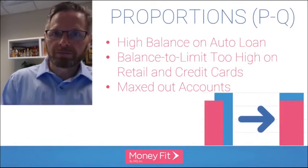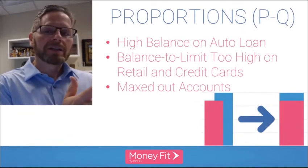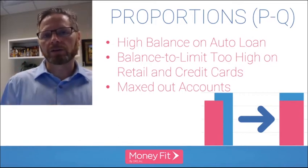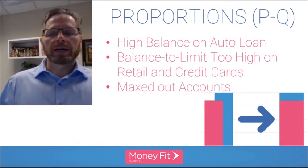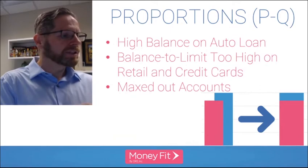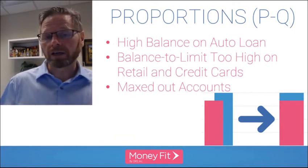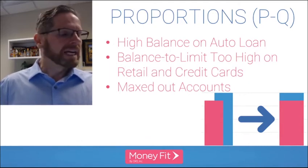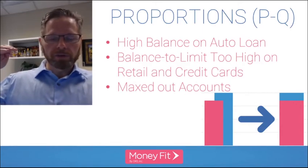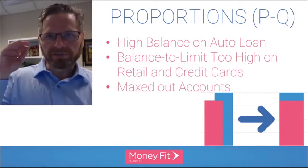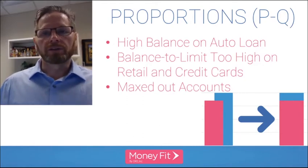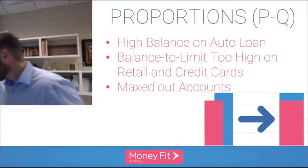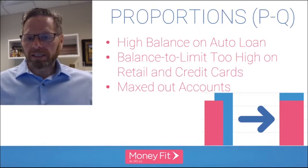Codes P and Q — mind your P's and Q's — are about proportions or ratios. High balances on an auto loan compared to its original balance, or a high balance-to-limit ratio on your retail and credit cards: these codes will kick in and negatively influence your score. If your card is maxed out or you're using nearly 100% of your credit limit, FICO will generate one of these codes.